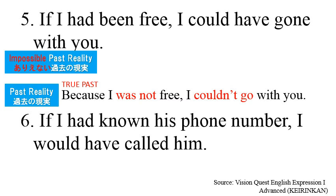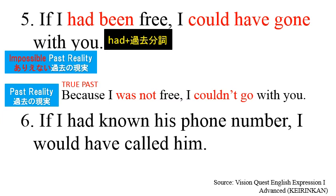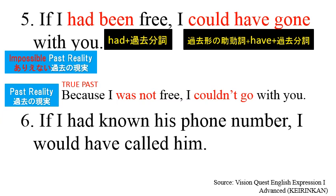The verbs used are 'had been' and 'could have gone.' When we talk about the impossible past reality, which is opposite to the past reality, you use 'had' plus past participle. Then, the past of the helping verb, plus 'have,' plus past participle.